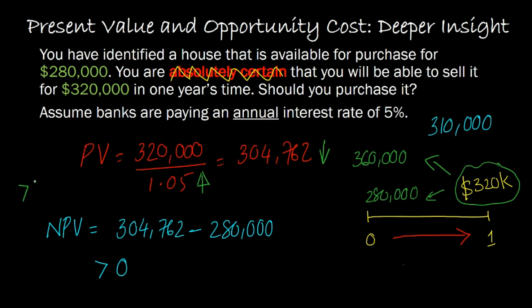In fact, your discount rate would need to be something greater than 5% to reflect the added level of risk. That is the idea captured by the answer that you'd be willing to spend less on this house right now — implicitly, you're using a higher discount rate to discount the same cash flows. One question you may ask is: okay, I understand that my discount rate needs to be greater than 5%, but how much greater? Specifically, how do I know what amount I should be willing to pay for this house today? I know it needs to be lower than 304,762, but the question is how much lower?